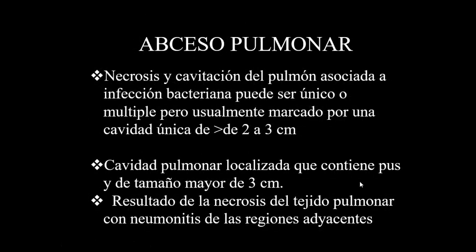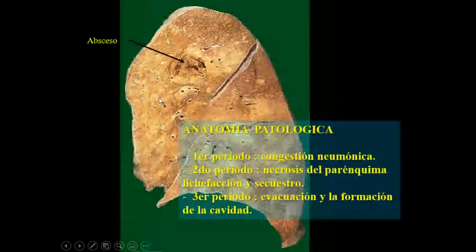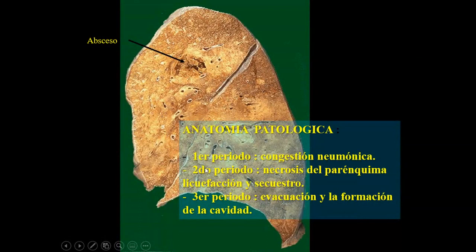En la definición, el absceso pulmonar es una zona de estructura pulmonar donde se genera necrosis, asociada a una infección bacteriana, que puede ser única o múltiple y que tiene la característica de tener una lesión entre dos a tres centímetros. Es una cavidad pulmonar que contiene pus, de más de tres centímetros, asociada a necrosis y neumonitis en las regiones adyacentes.